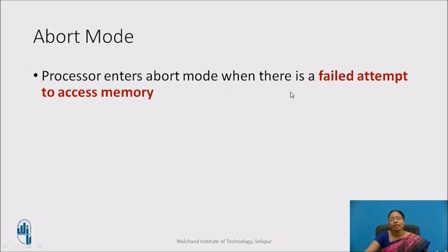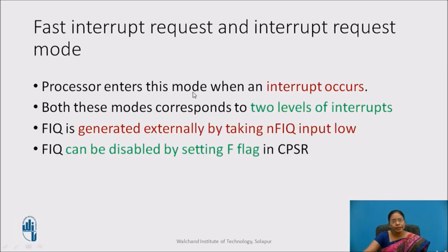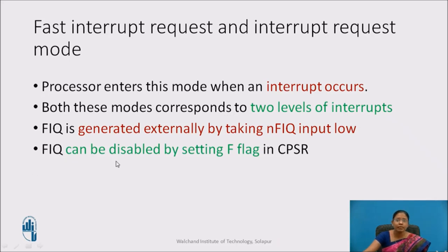Abort mode indicates there was a failed attempt to access memory. The processor enters fast interrupt request mode and interrupt request mode when an interrupt occurs. Both these modes correspond to two levels of interrupts. FIQ is generated externally by taking the nFIQ input low. FIQ indicates a fast interrupt request and it can be disabled by setting the F flag in CPSR to 1.